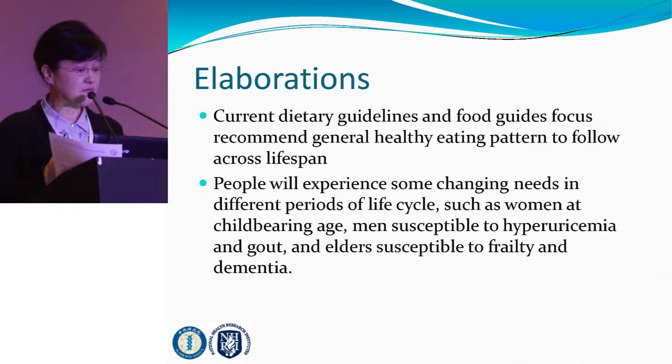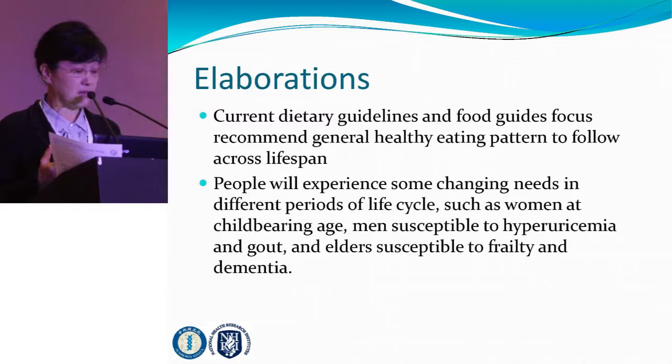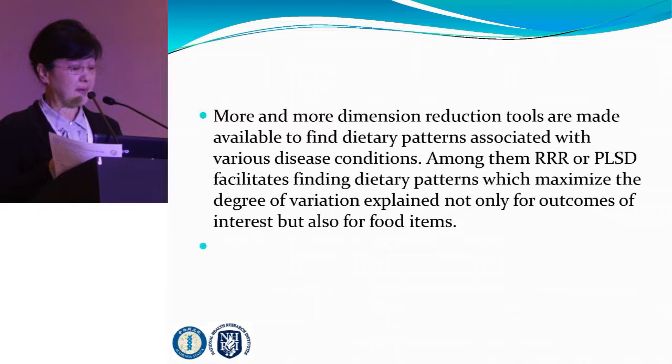To elaborate a little bit more: current dietary guidelines focus on recommending general healthy eating habits to be followed across the lifespan. But people have changing needs in different periods of their life cycle, and different susceptibilities to specific conditions — such as children being susceptible to school performance issues, men being susceptible to hyperuricemia, and elderly adults being susceptible to frailty and dementia. More and more, dimension reduction tools are being made available so we can use them to find dietary patterns associated with various health outcomes.